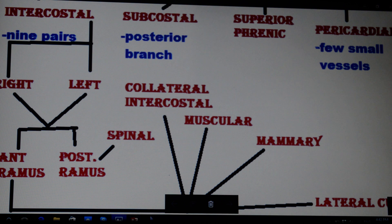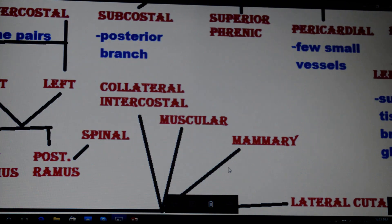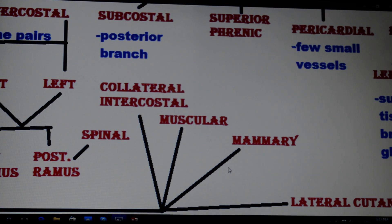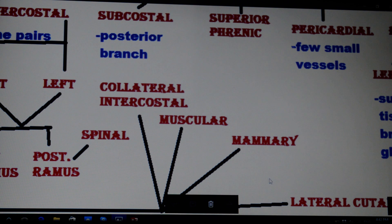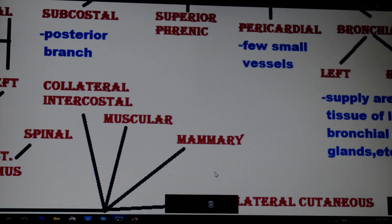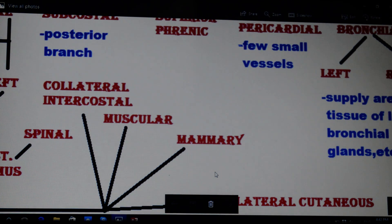Next are the mammary arteries, which are present in the third, fourth, and fifth intercostal spaces. They provide blood to the mammary glands during the lactation period, during which they increase somewhat in size. Next are the lateral cutaneous branches, which also give branches supplying the cutaneous tissues.